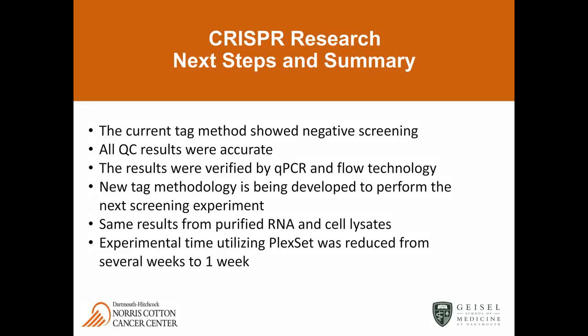In summary of the CRISPR research: the current TAG method was showing negative screening. Our QC results were all correct and accurate with the Plexet, and the results were verified by qPCR and flow cytometry. They need to develop a new tagging strategy, which is exactly what they're doing now. We got the same results from purified RNA as from cell lysates — a real benefit since using lysates saves enormous time, especially when doing many cell lines as in CRISPR work. Experimental time was reduced from several weeks to one week by using the Plexet strategy instead of qPCR.